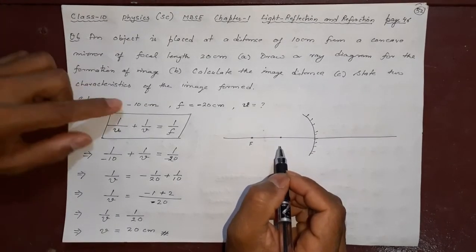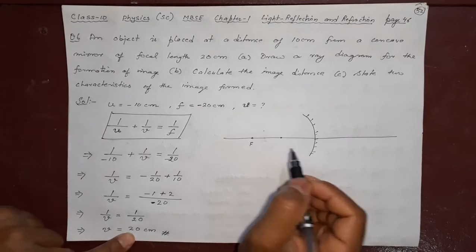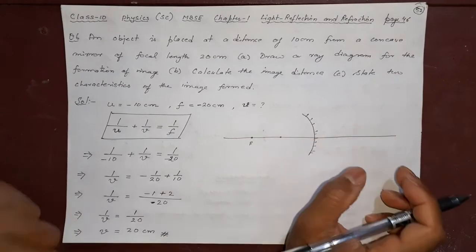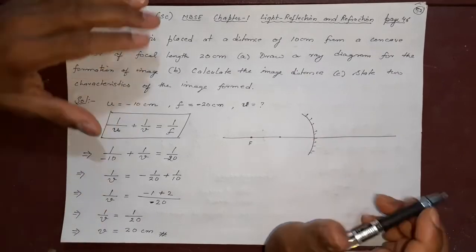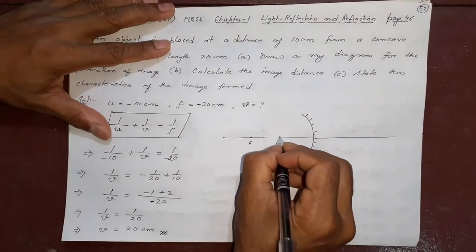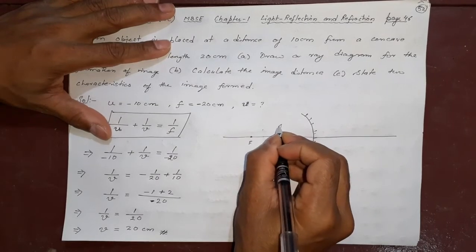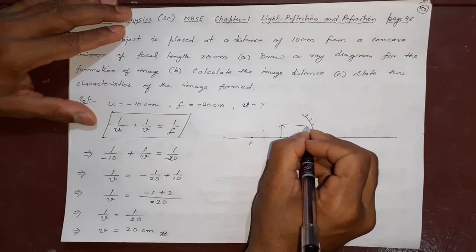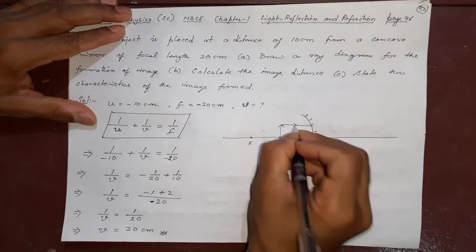And then where is the image formed? 20 on the right side. That means focal length 20 and almost here the object, the image will be there. Let's see. This is my object. Fine. What type of image it is? Going here.